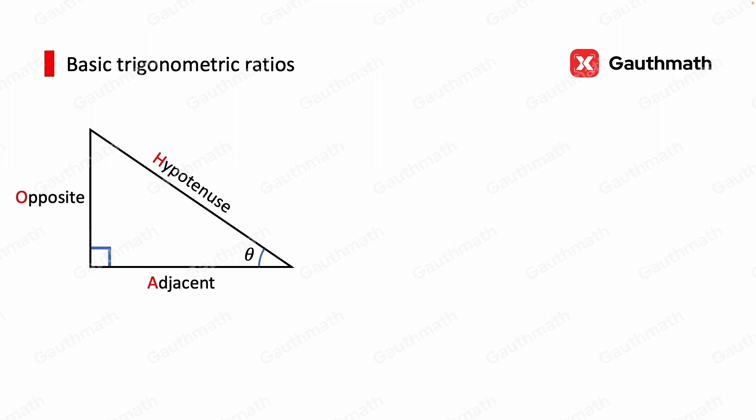We have to remember SOHCAHTOA, which says sine theta is equal to opposite over hypotenuse, SOH, and cosine theta is equal to adjacent over hypotenuse, CAH.